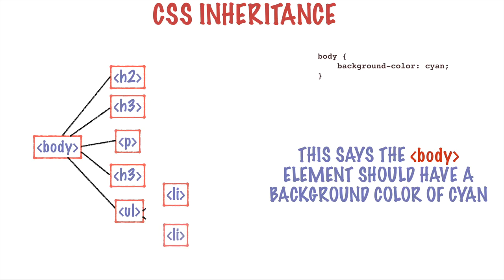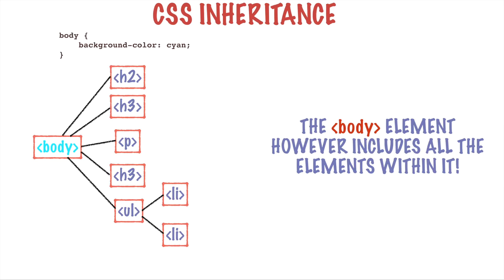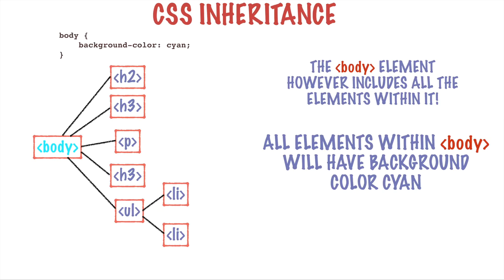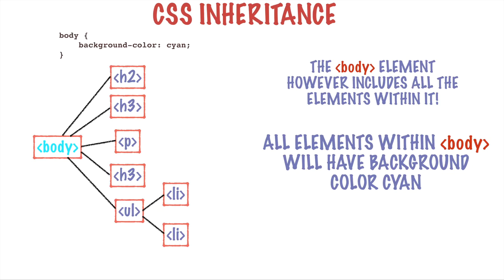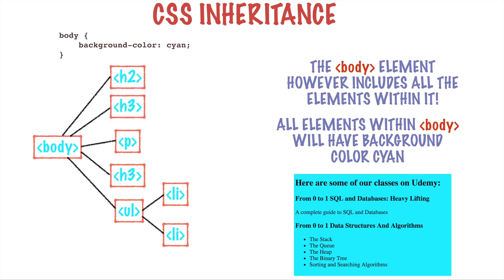For instance, here we've defined a CSS style saying that the body element should have a background color of cyan. All of the elements nested within the body will also be governed by the same style and therefore will have the same background color of cyan. Anytime you apply a rule or style to a particular element, all of the nested elements below it are also going to be governed by the same style — and here on screen is what this style looks like. The entire page has been turned into this bright, lurid blue cyan background.